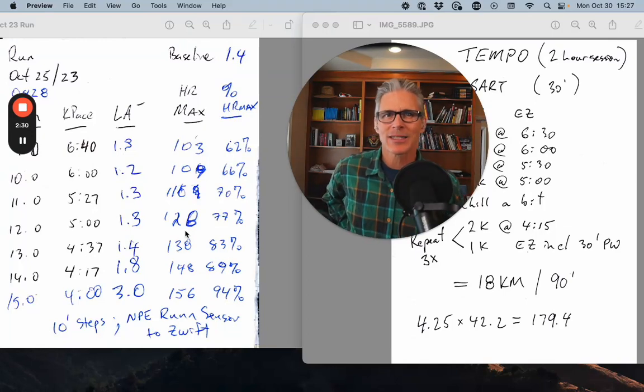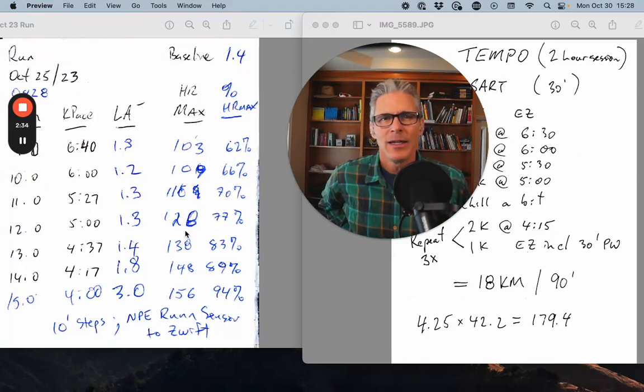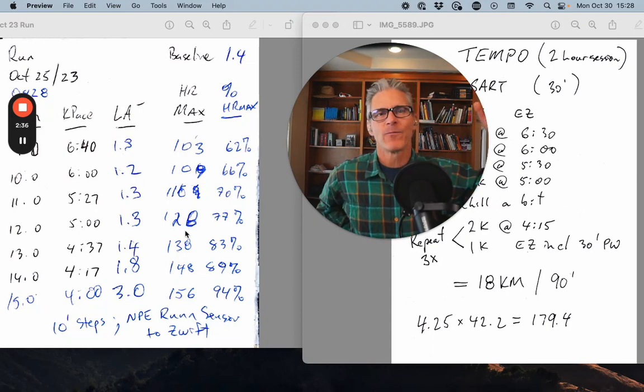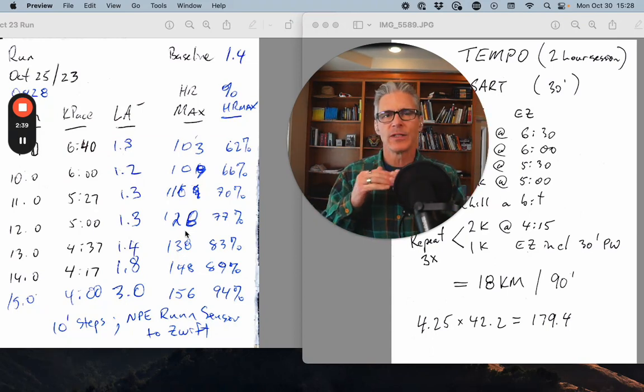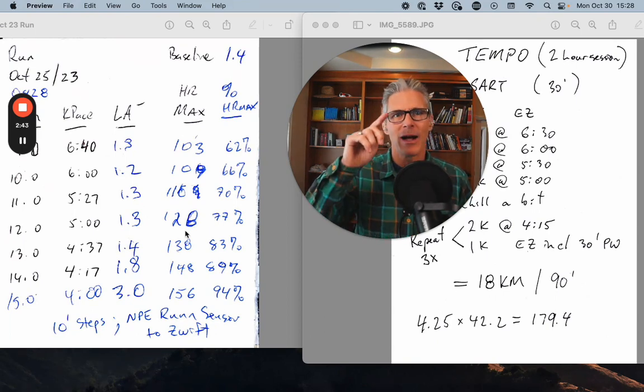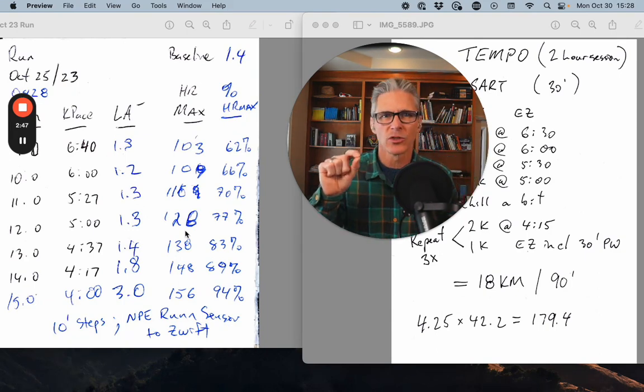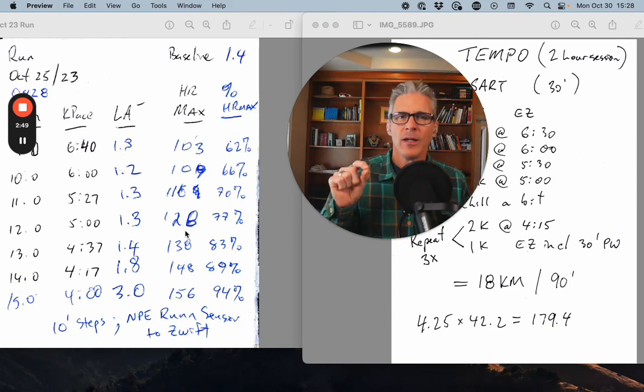That was the maximum heart rate that I saw in that 10-minute step. To that, we're going to add 15 beats. So 130 plus 15, that's 145 for the bottom-up estimate of tempo to get myself into what's called zone 3.